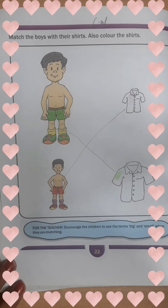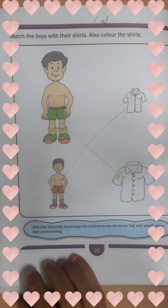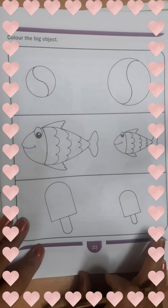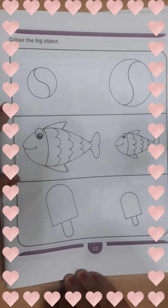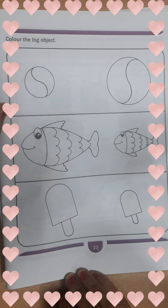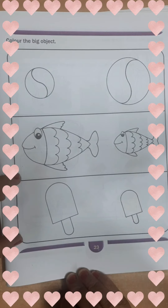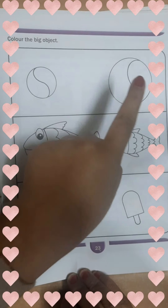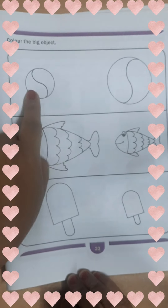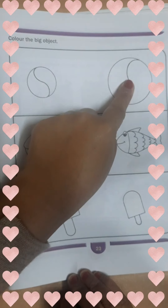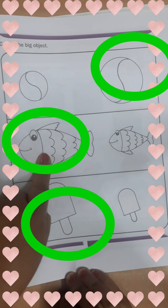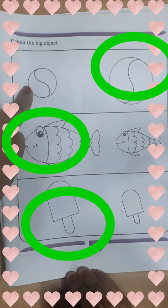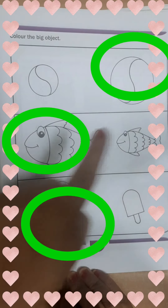Now I am going to tell you about the homework. Your homework is page number 23. In this page you have to color the big object. Look at these boxes — see which one is big and color only that one. For example: big fish — color it. Don't color the small one. Big ball, small ball, small fish, big fish — color only the big one.